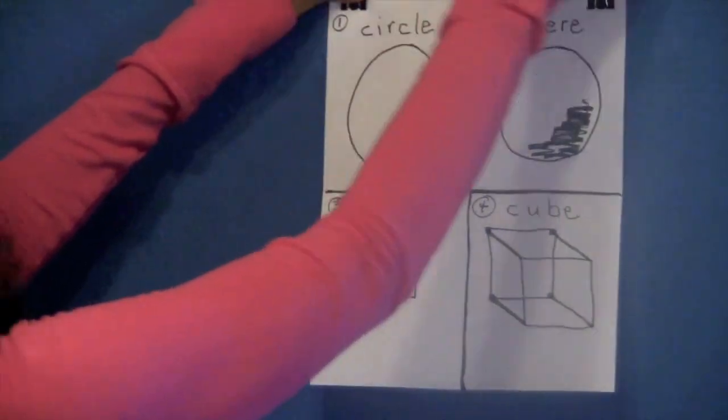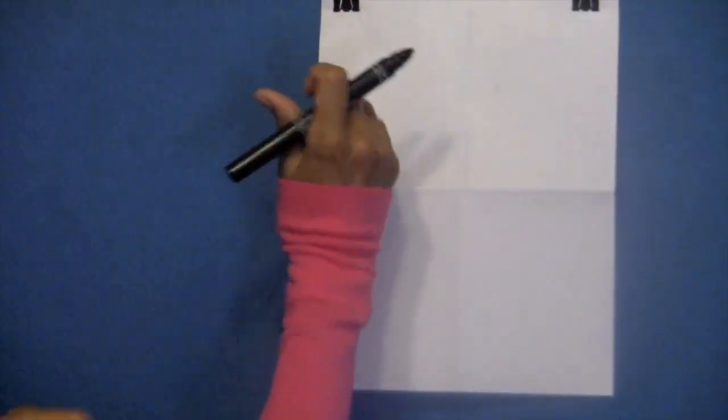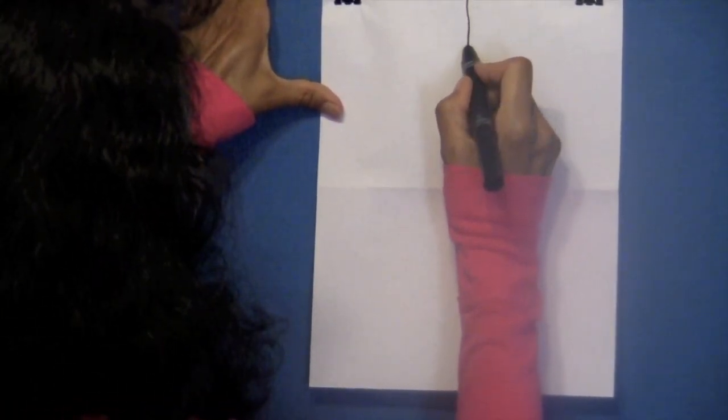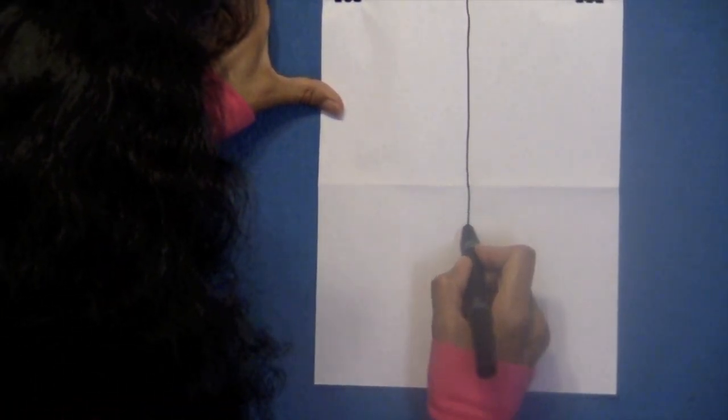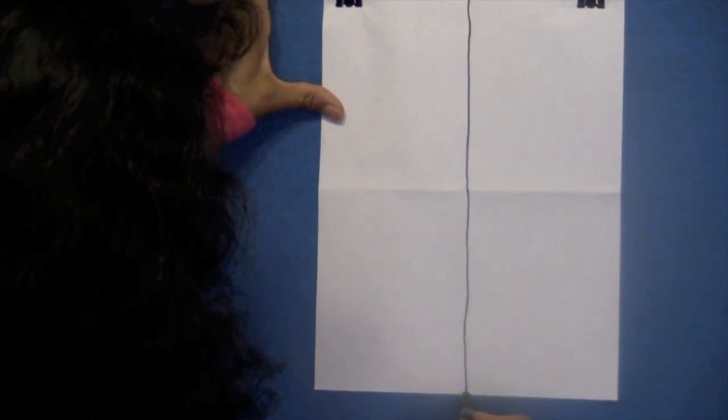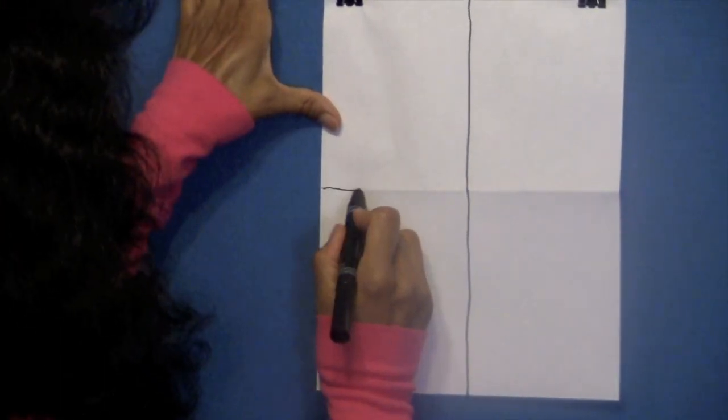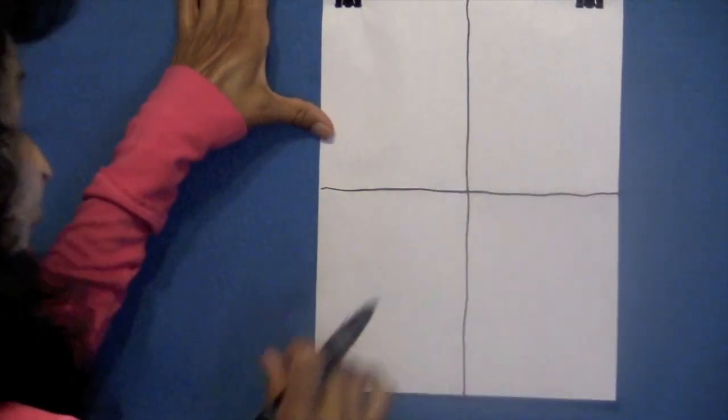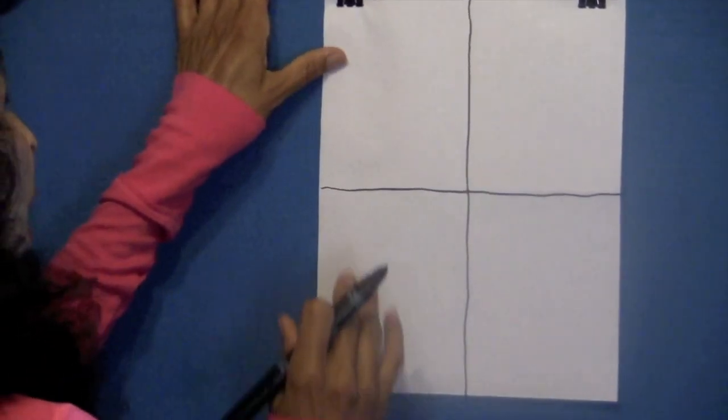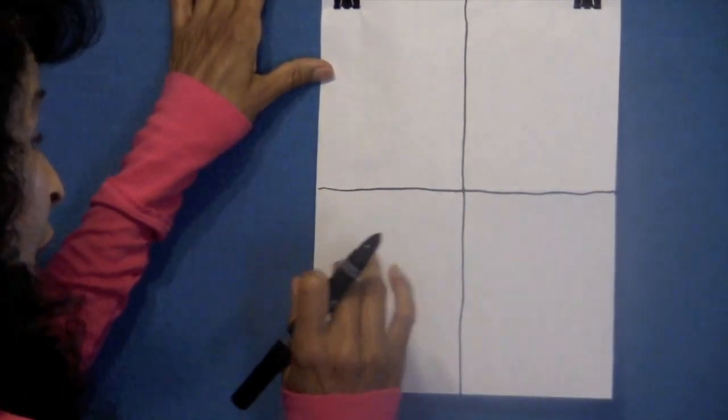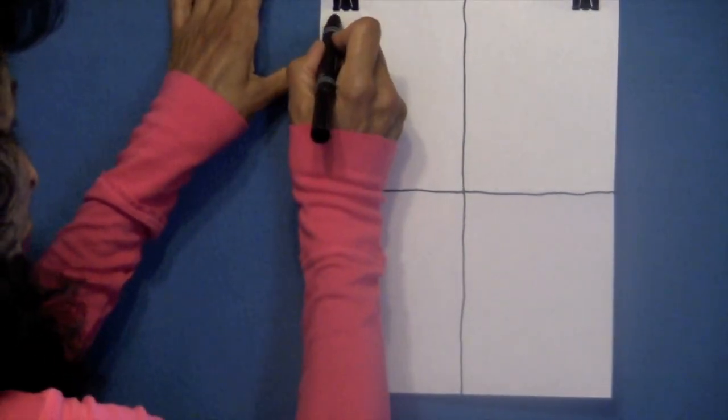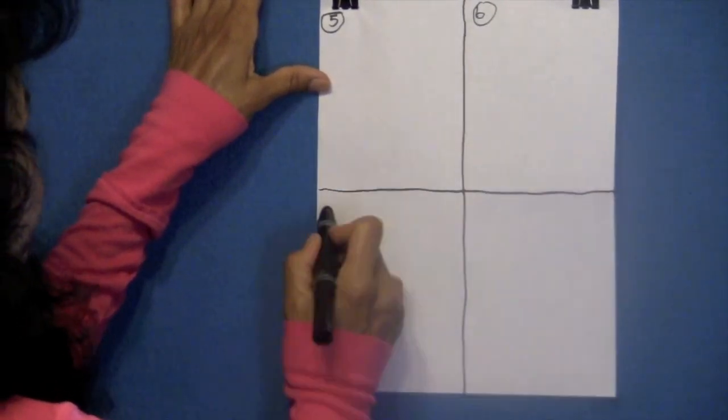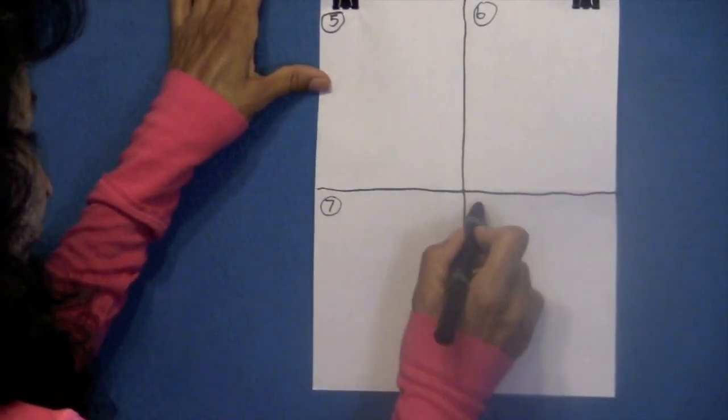Now I want you to turn over your paper. Okay, we have our paper turned over. Now we're going to draw a line down that fold again in the back. And I'm doing a better job now because of practice. And when we practice, we get better. Now on the front, we had one, two, three, four. So this one's going to be box five, six, seven, eight.